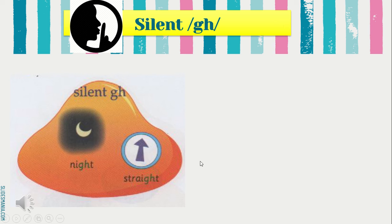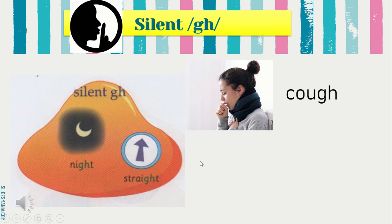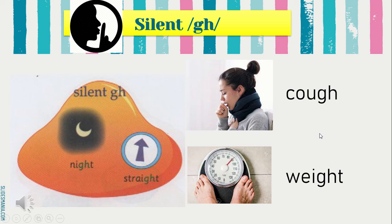Let's look at another example. You see the letters GH here, but it is silent. So we say this word as 'cough'. Bukan 'count' or 'caught' — it is 'cough'. Next we have the word 'wait'. Again, the letters GH is silent. Silence means senyap, tidak berbunyi. Cough, wait.